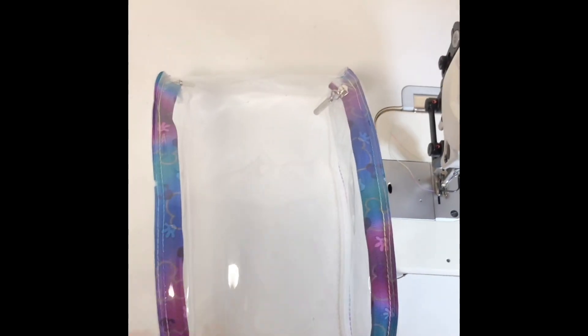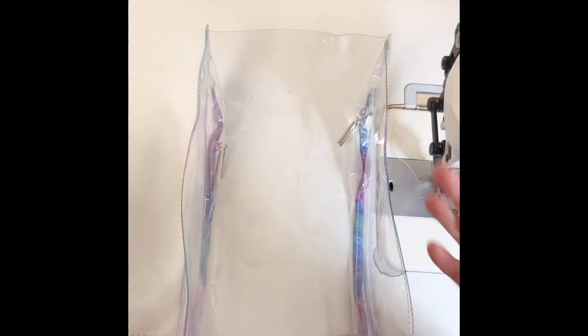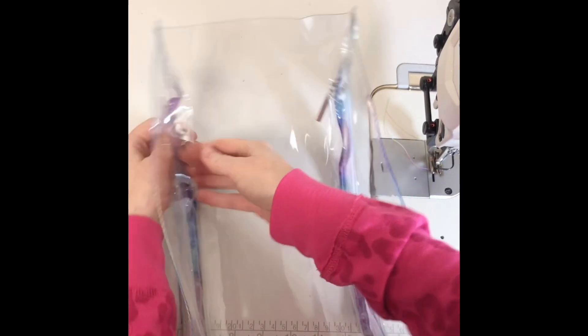So all zippers are on, it's currently inside out so I'm going to leave it like that. You can turn it right side out to check things, but I've already made this before so I'm not going to bother.